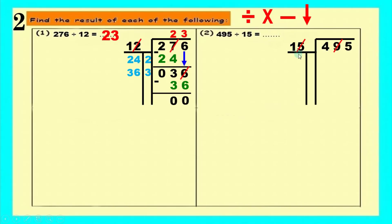Four divided by one equals four. We try four in the margin: four times five equals twenty, write zero and carry two; four times one equals four, four and two equals six — giving sixty. But we only have forty-nine, so four is too big. Let's try three: three times five equals fifteen, write five and carry one; three times one equals three, three and one equals four — giving forty-five. We have forty-nine which is more, so three works.